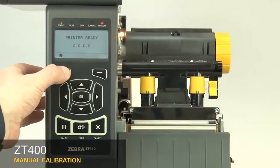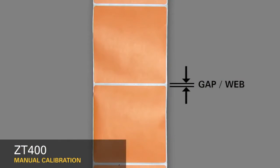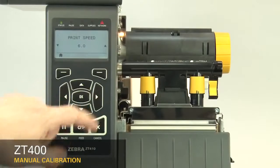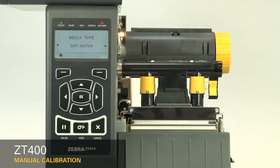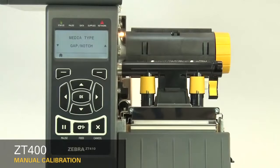First, select your media sensing feature in the menu. If your media has a gap, also referred to as a web, or has holes or notches, select Gap Notch in the menu. If your media has a black mark on the underside of the media, select Mark in the menu.